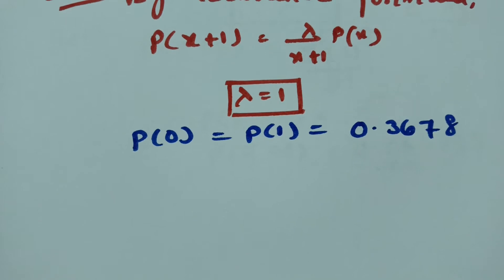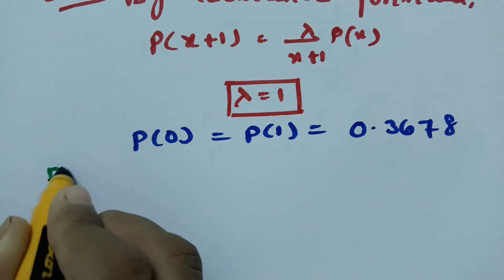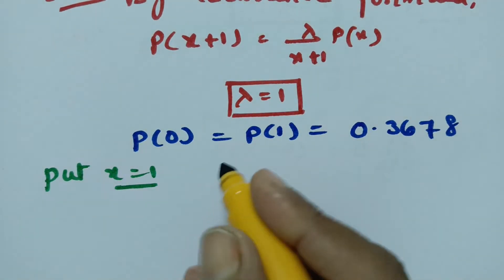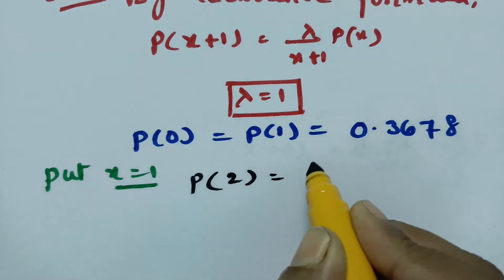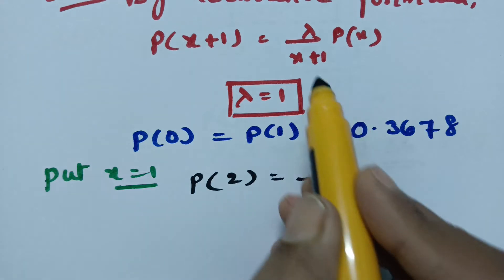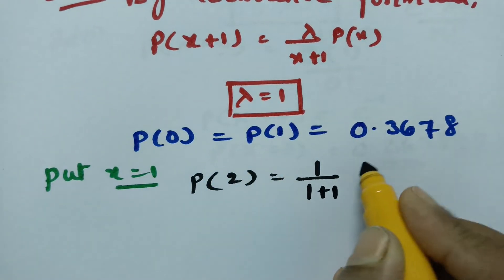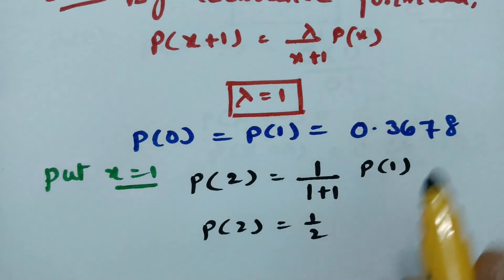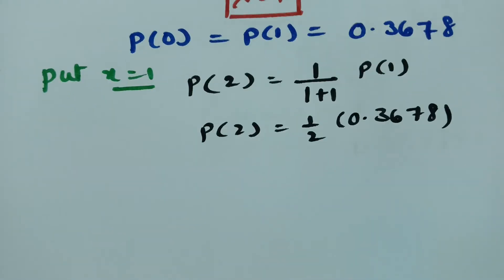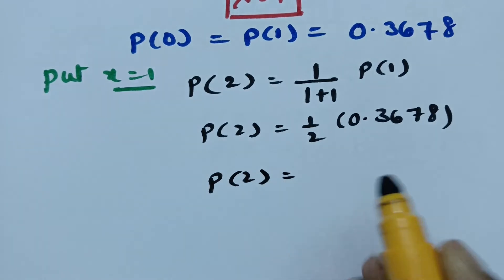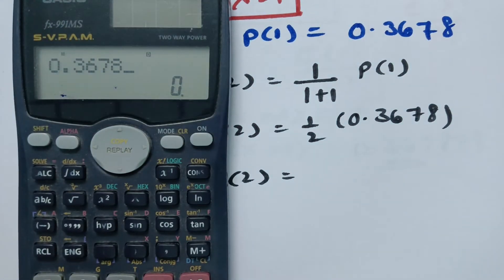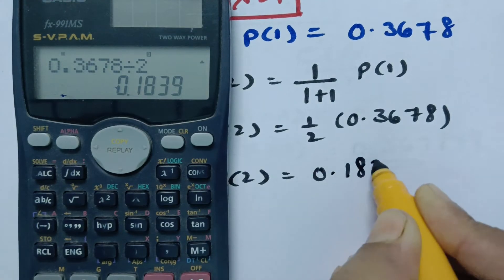Now we keep substituting values. If I put x equals 1 in the recurrence formula, probability of 2 equals lambda divided by (1 plus 1) times P(1), which is 1 over 2 times 0.3678. Therefore probability of 2 equals 0.3678 divided by 2, which equals 0.1839.